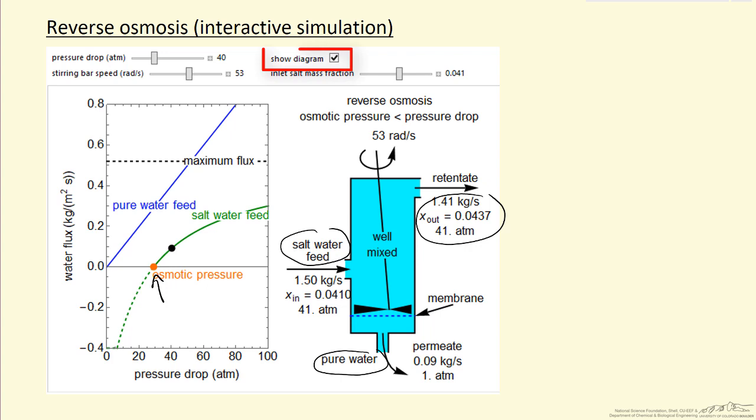If I uncheck this box at the top that says 'show diagram,' I'll remove this diagram on the right and just get a bigger figure of the graph to make it easier to see the behavior.